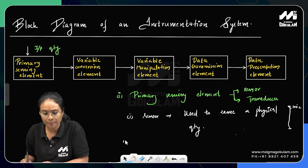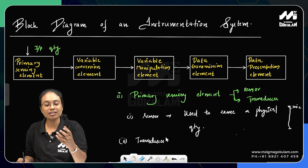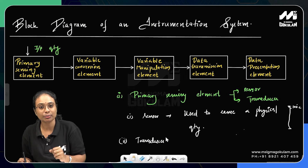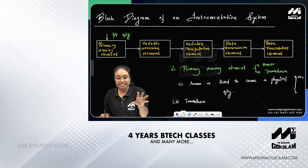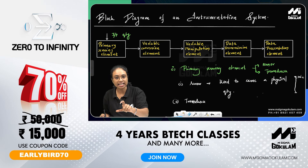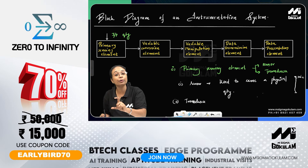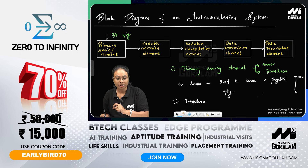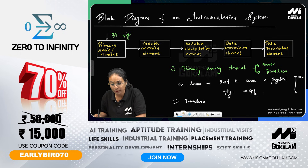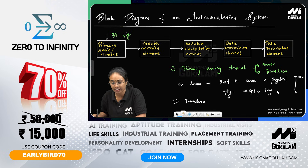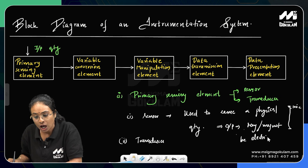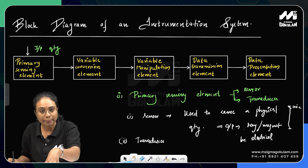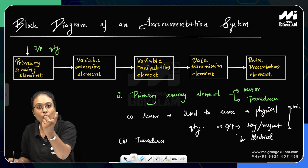Now, what is a transducer? In textbooks, the transducer is defined differently from a sensor. When the sensor detects a physical quantity, the output from a sensor may or may not be electrical — for example, the thermometer sensor gives output in terms of length, not voltage or current.